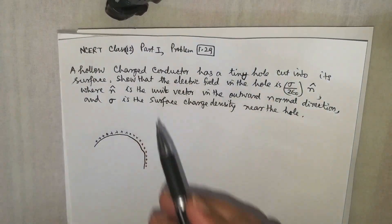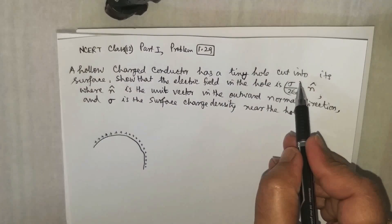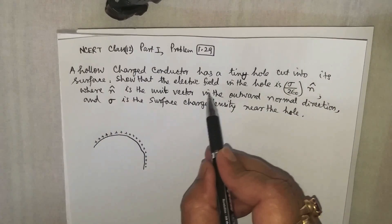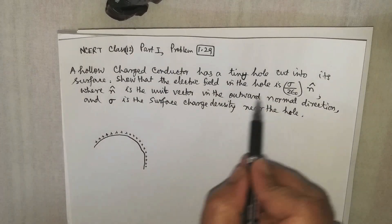In this case, it is shown that there is a hollow charged conductor, whatever may be the shape, and it has a very tiny hole cut anywhere. We have to show that just at the mouth of the hole, the electrostatic field strength is sigma by 2 epsilon naught n, where n is the unit vector in the outward normal direction and sigma is the surface charge density.